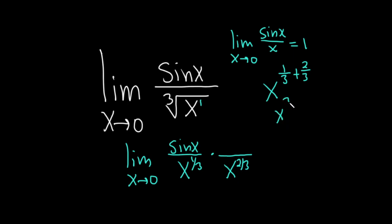And so you get one third plus two thirds. So that's going to be three thirds, which is one, x to the one, which is x. So that's the idea.